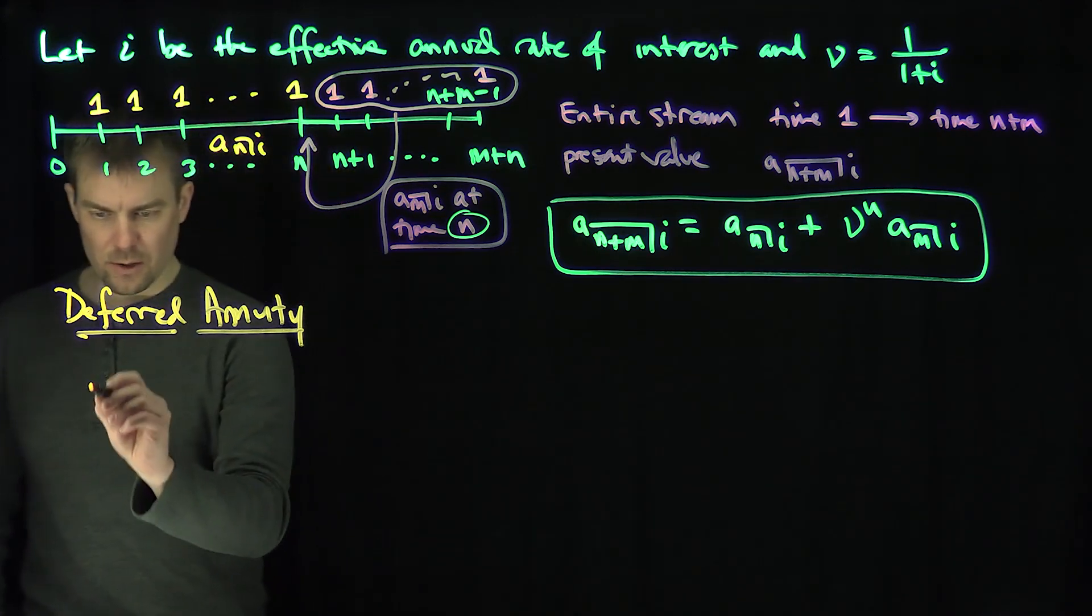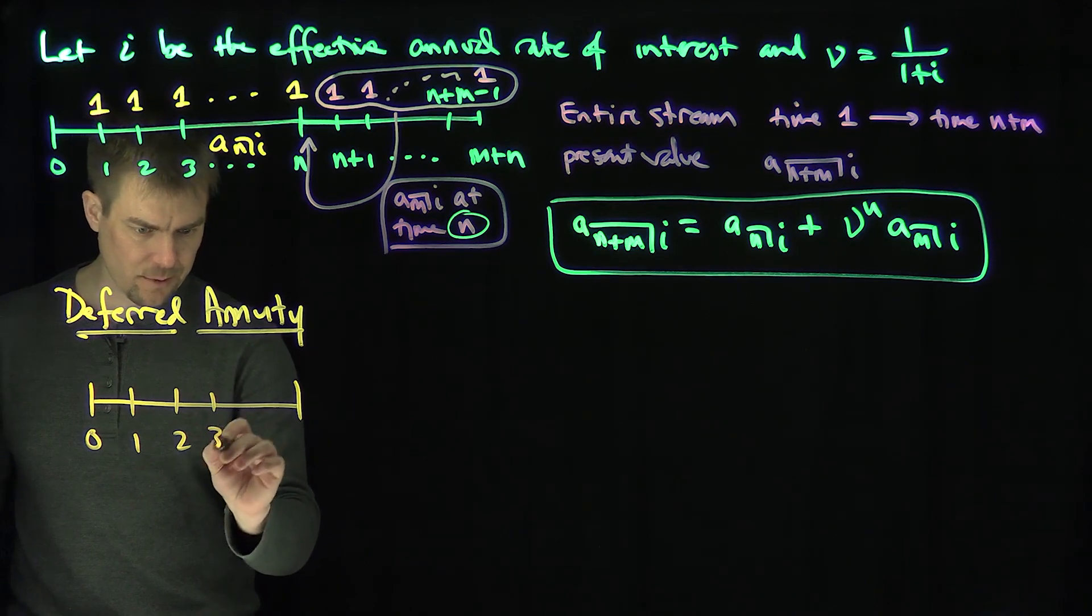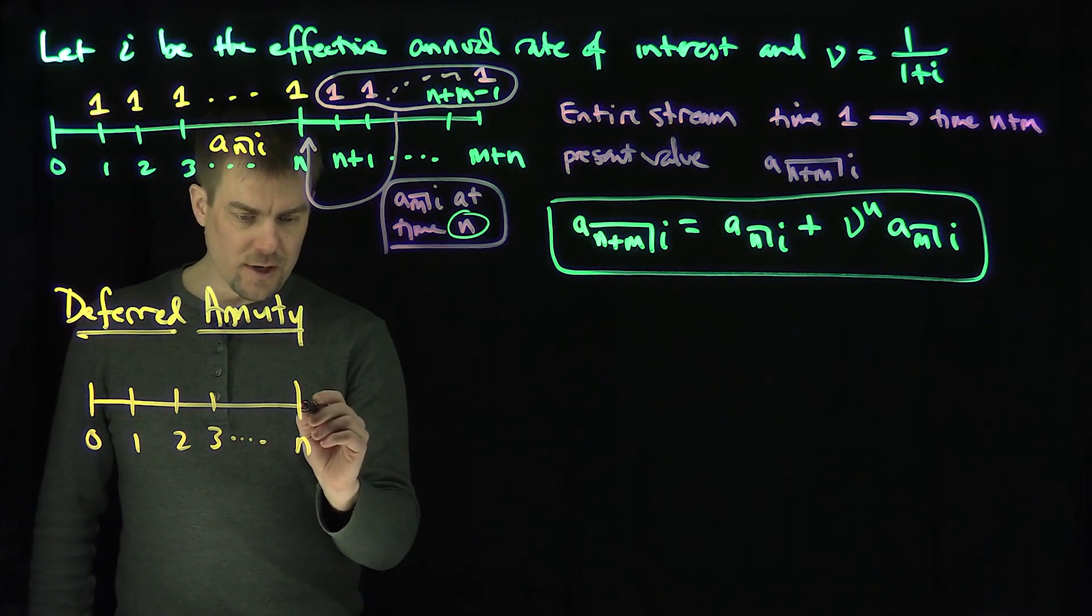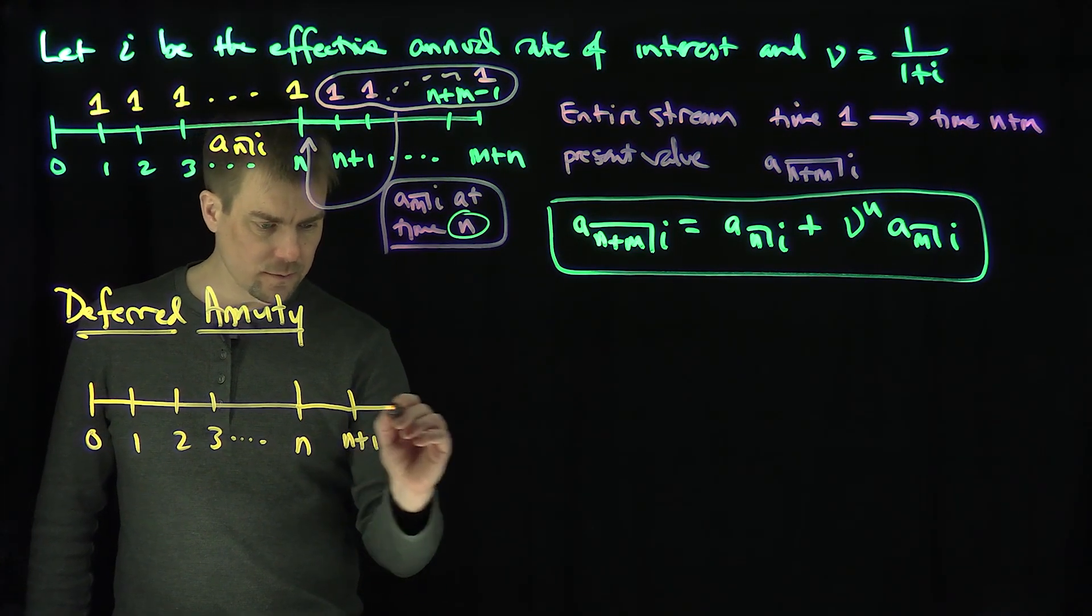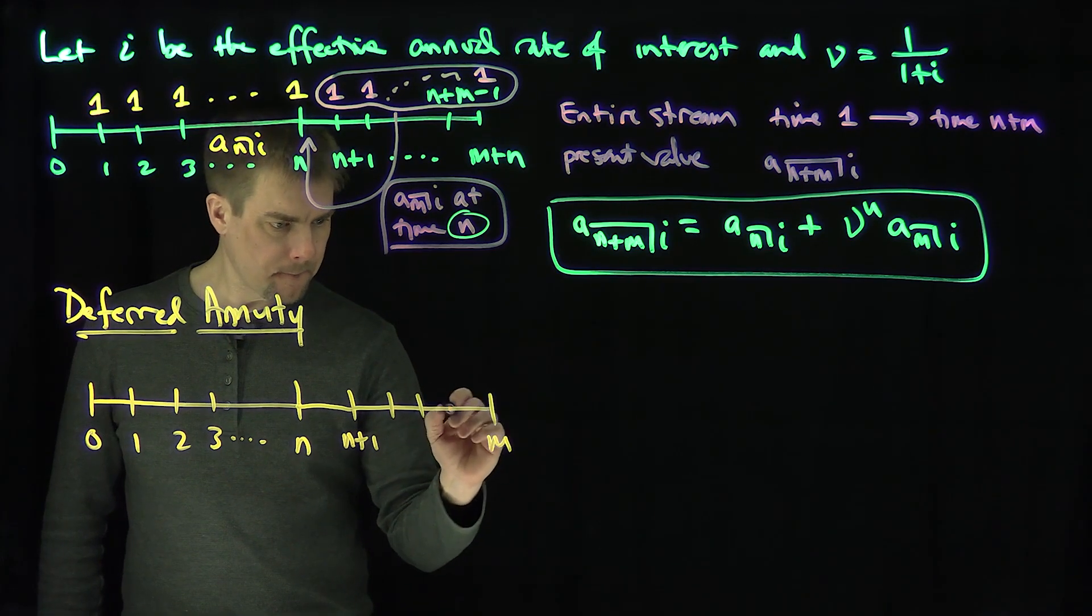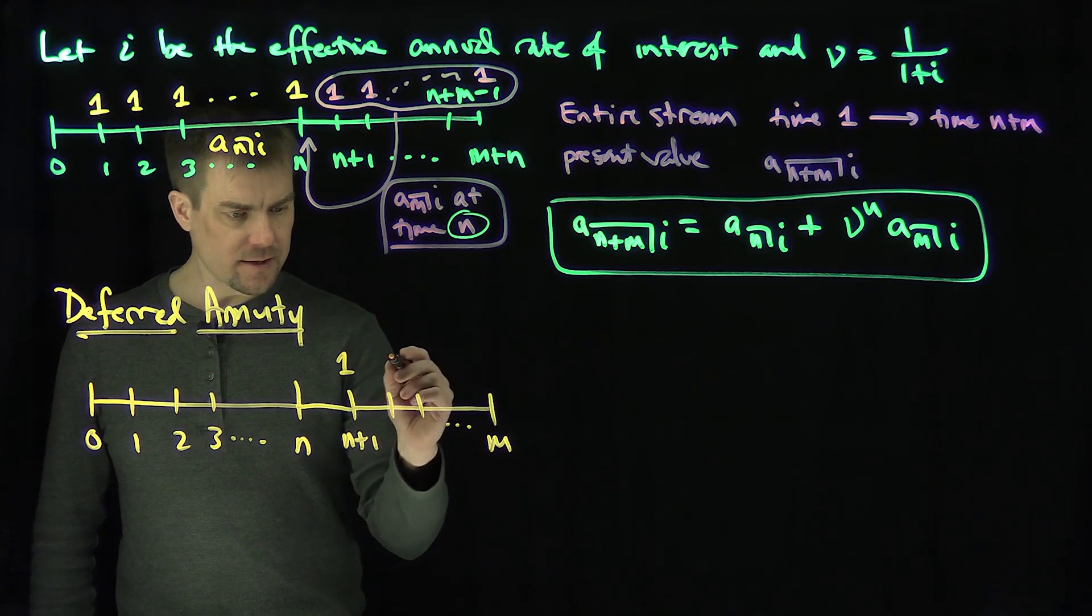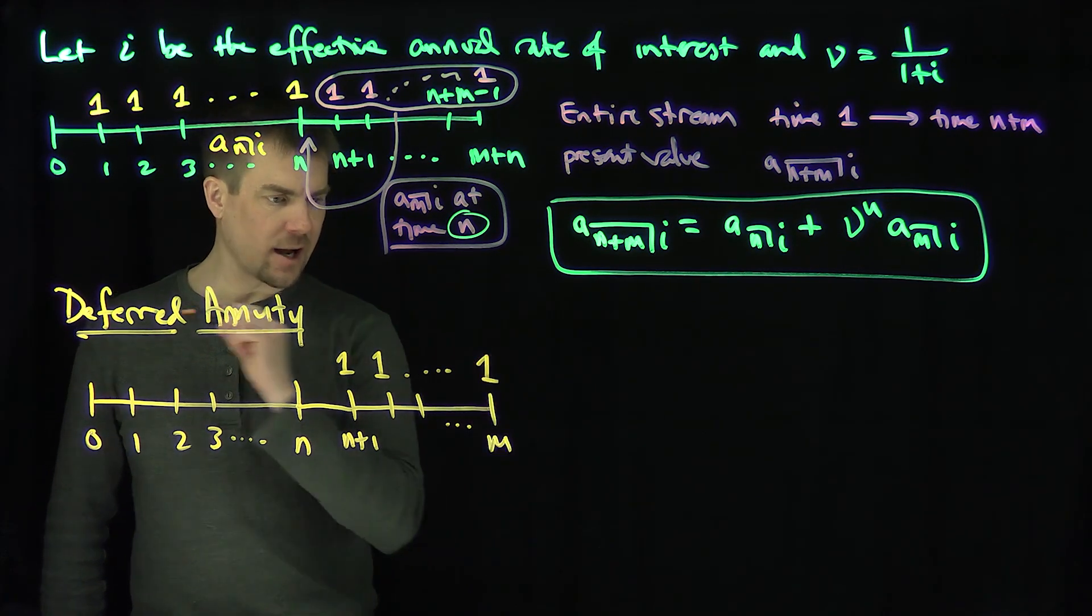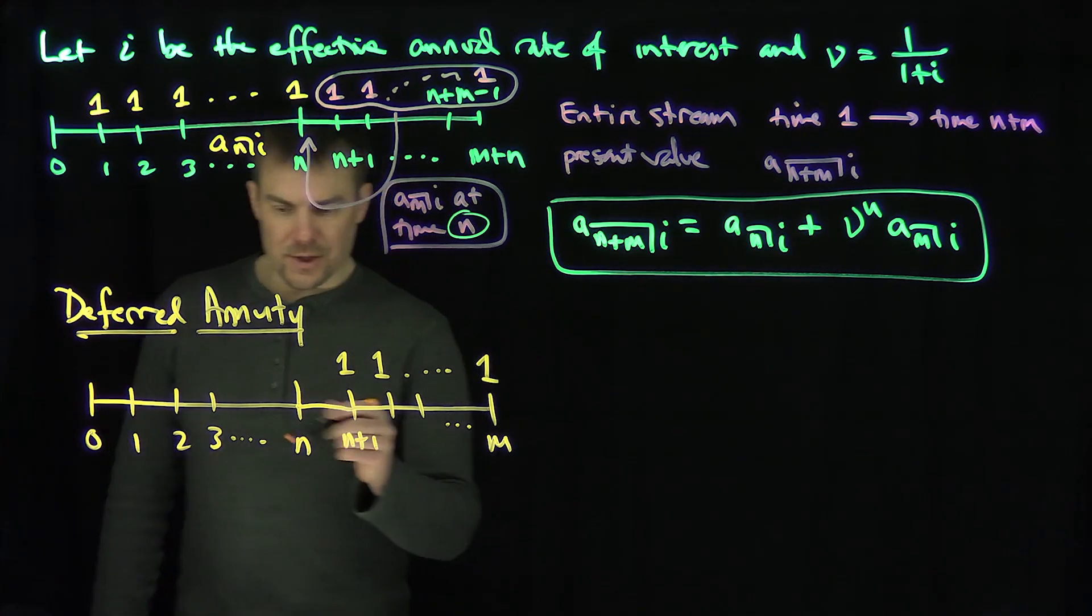What is this stream going to look like? Here's time zero, time one, time two, time three, all the way down to time n. Then the annuity payments are going to turn on at time n plus one, all the way down to time m. So you get payments at time n plus 1 all the way to time n plus m.